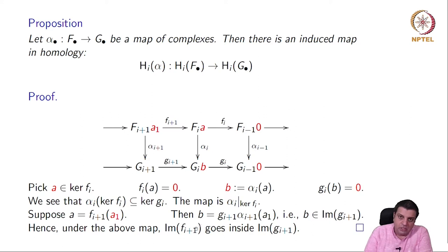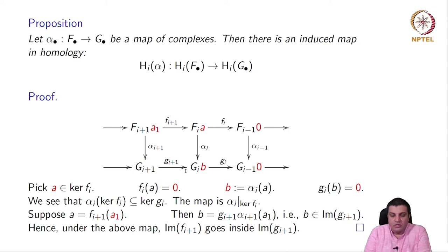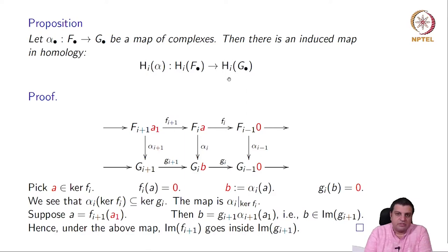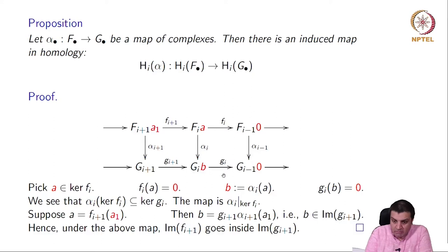We have a map from kernel mod image in the top row to kernel mod image in the bottom row, and that is exactly the map from H_i(f) to H_i(g). So any map of complexes, through this diagram chasing, gives a map in homology.